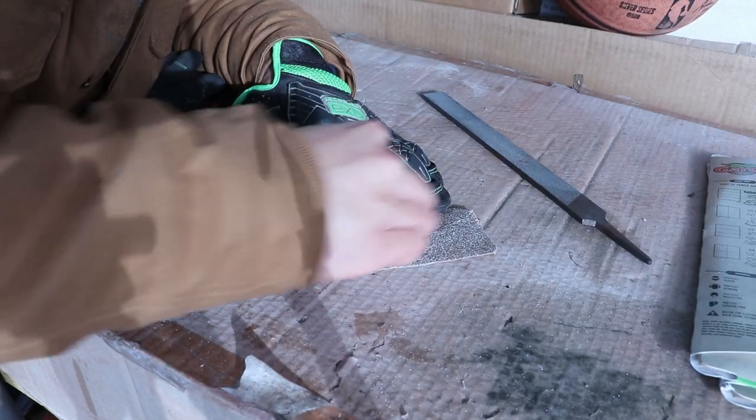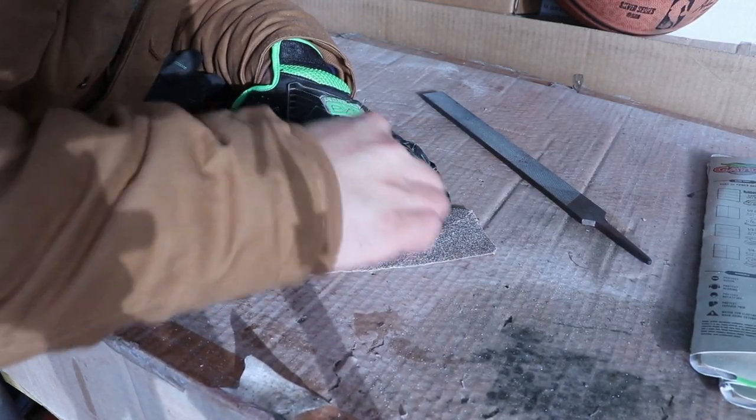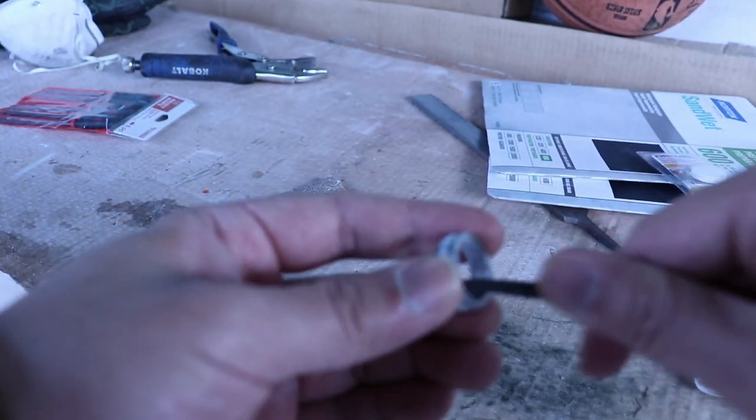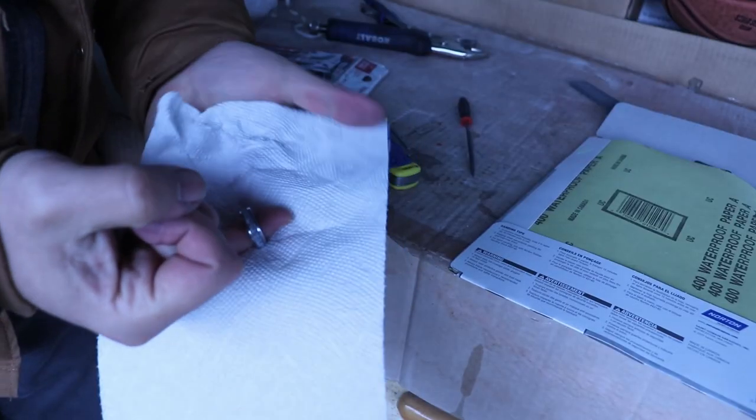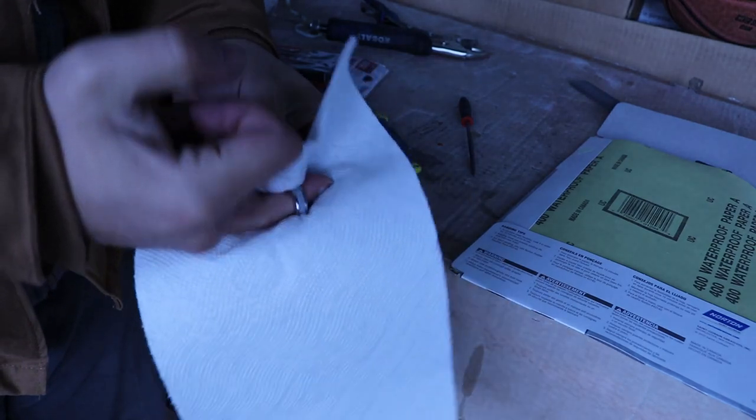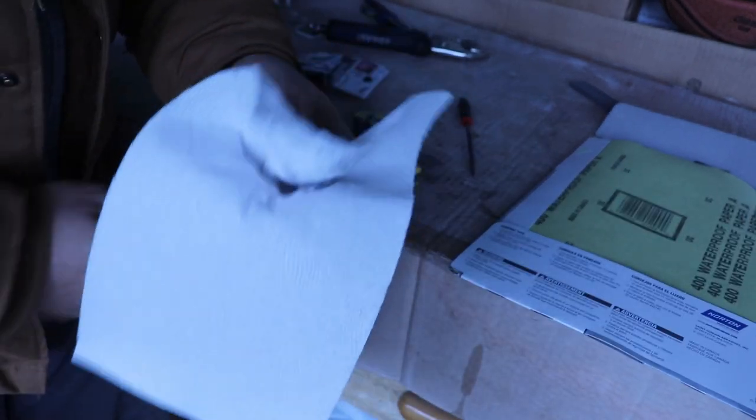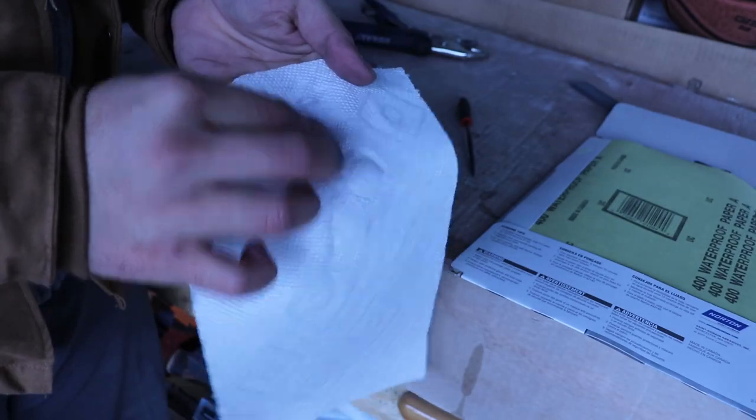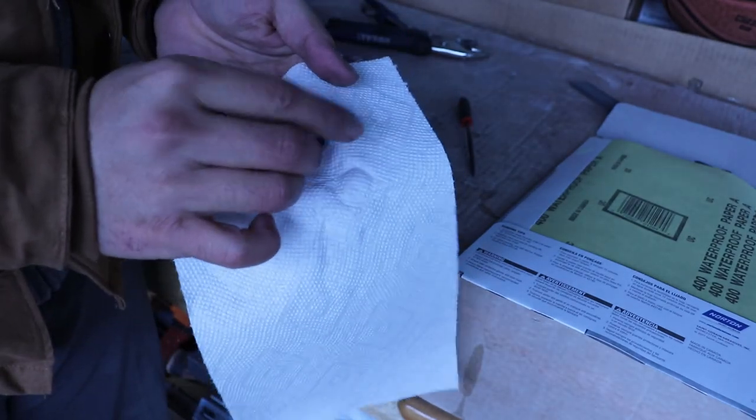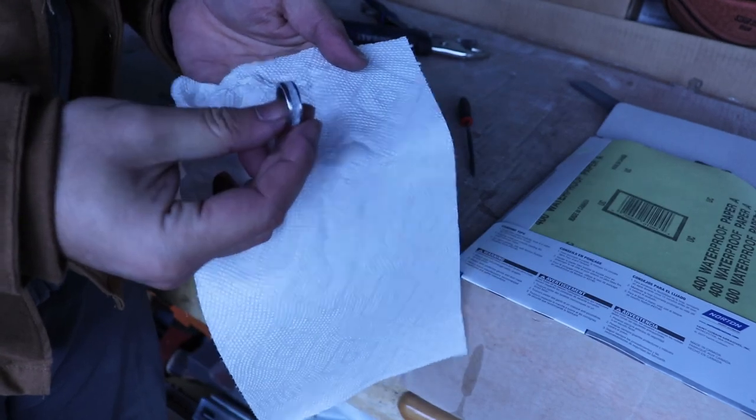Once all the excess is filed off it's time to do the fine sanding. I start from 60 grit to 120 to 300, and then after that it should look pretty shiny like here. Soon it's coming, it's coming just wait. Alright.